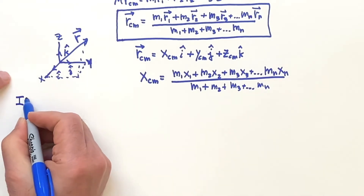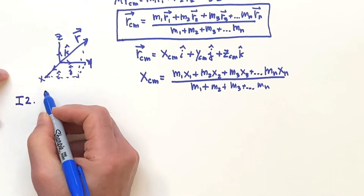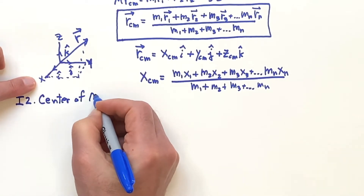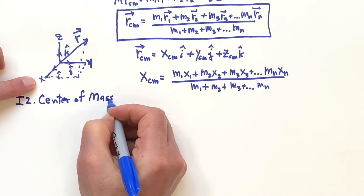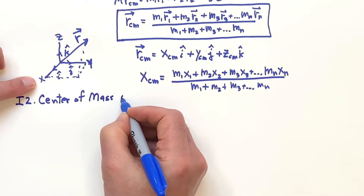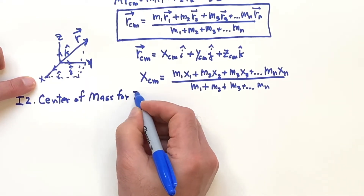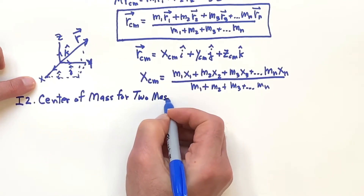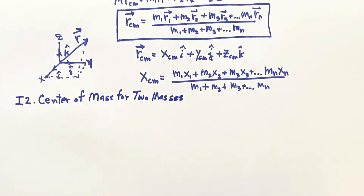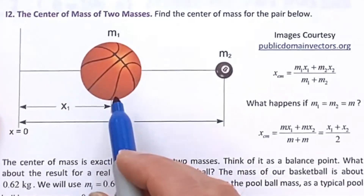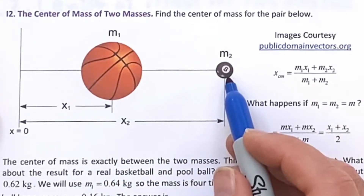Section I2: center of mass for two masses. In physics, we always like to look at the simplest case to get insight as to what's going on. What we're going to do here is look at a basketball and a pool ball.